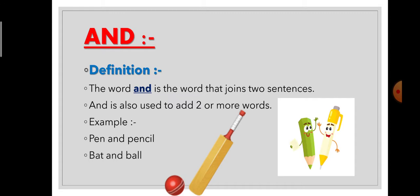Same way, bat and ball. Bat is a word. Ball is also a word. And if we want to add these two words, then we use AND — bat and ball. So, to add two words, we always use AND. And if we want to join two sentences, that time also we always use the word AND.